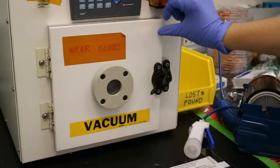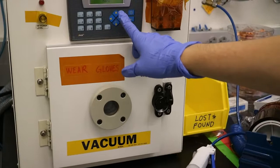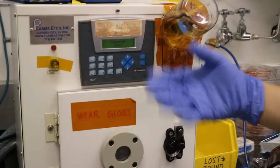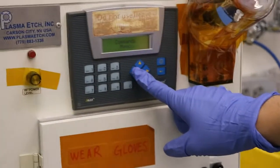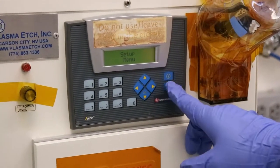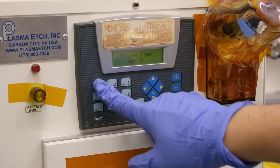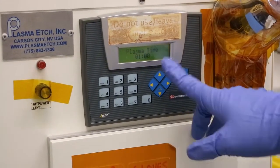Then close and lock the door, and we can set the time for how long we want to treat using the O2 plasma. Go to the setup menu. For example, I'm going to put one minute to treat.